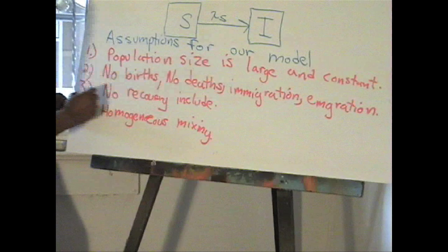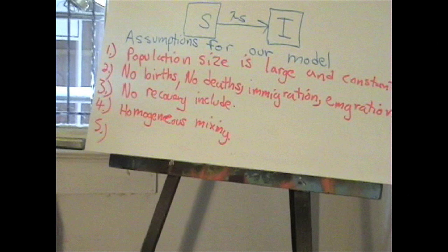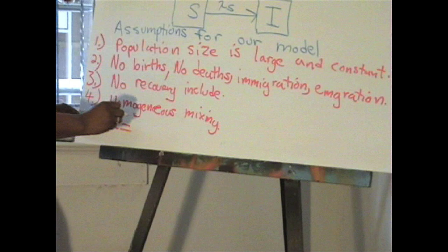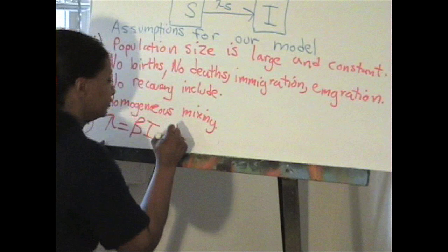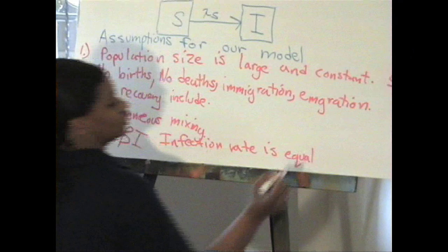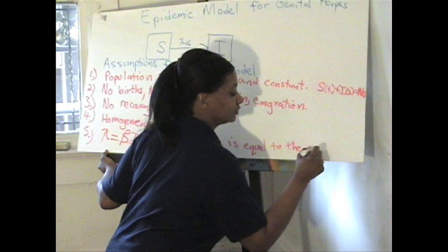Our fifth assumption is that the infection rate is proportional to the number of infected. So we'll use Gamma equals beta times I. Our infection rate is equal to the amount of infections.